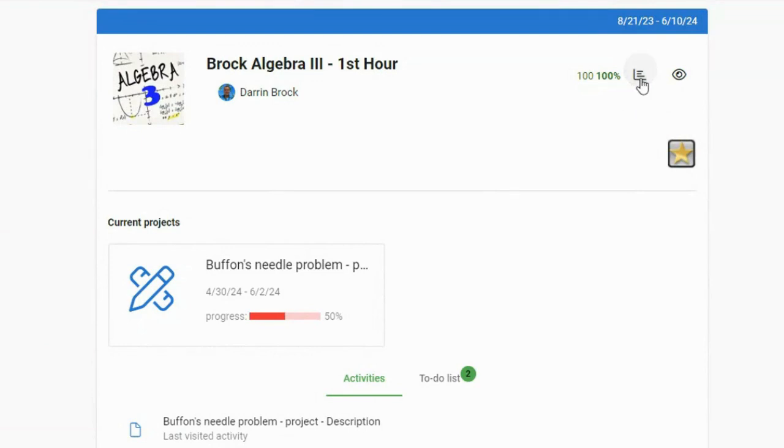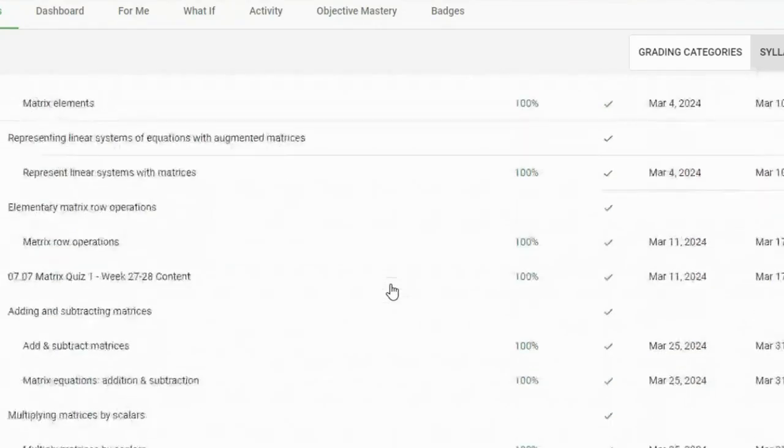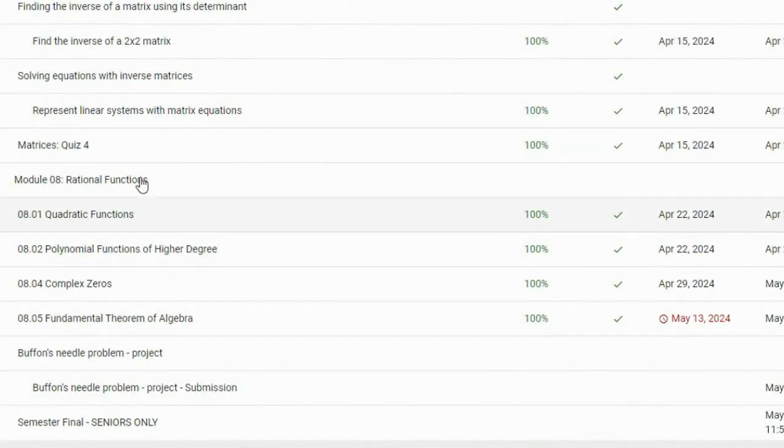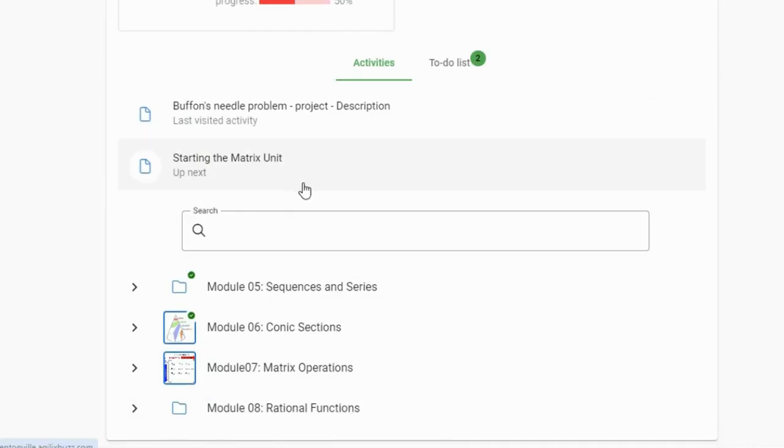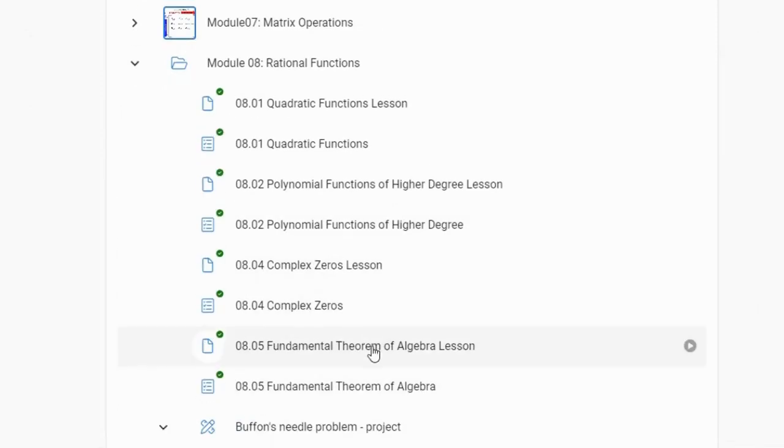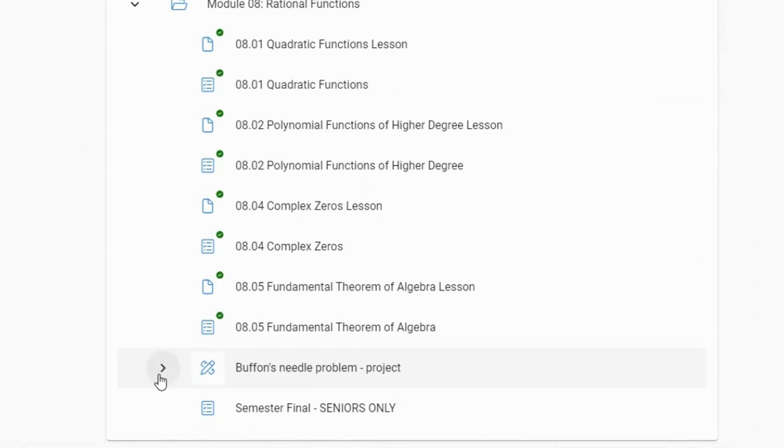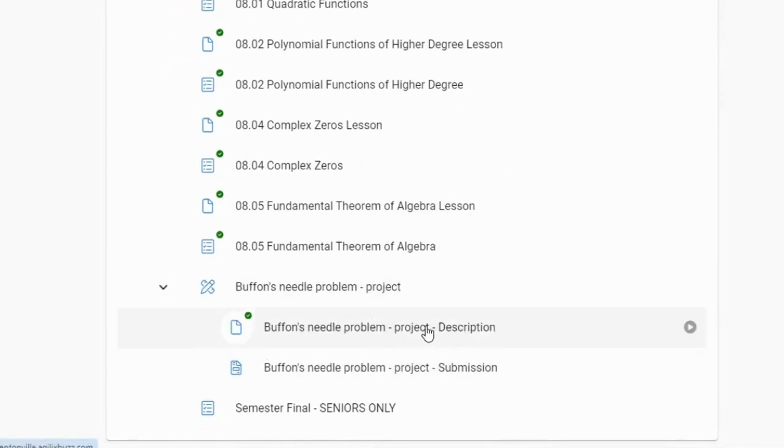Looking at our grade screen as usual, let's scroll down. We are done with Module 8, nothing left for Module 8. 8.5 was due last night. But we have Buffon's needle problem, this is a project. It's due this Sunday. Let's go to activities and see what this project is. This is in the Module 8 folder. You'll see there's a folder down here called Buffon's needle problem project.